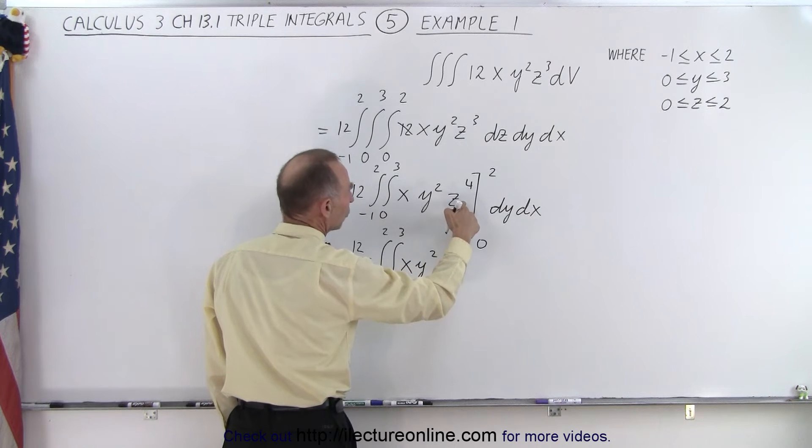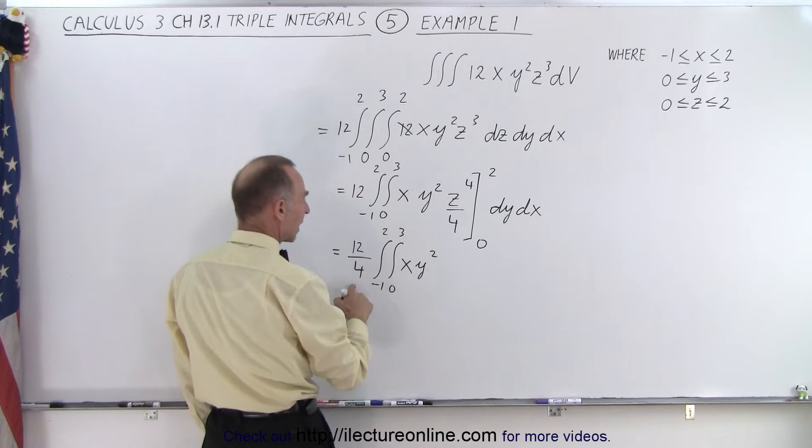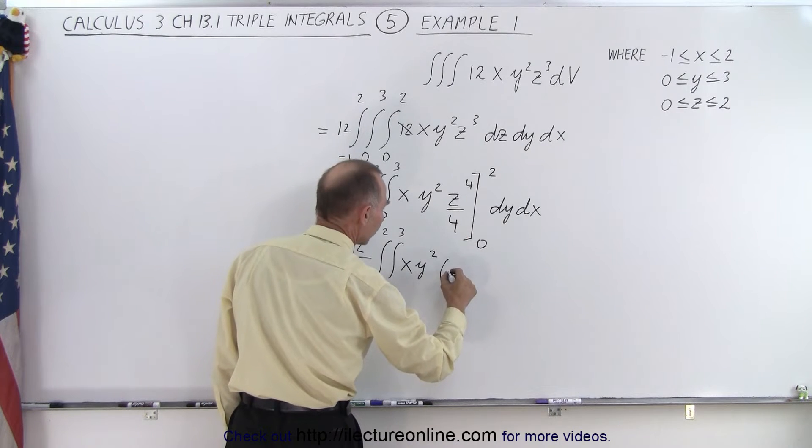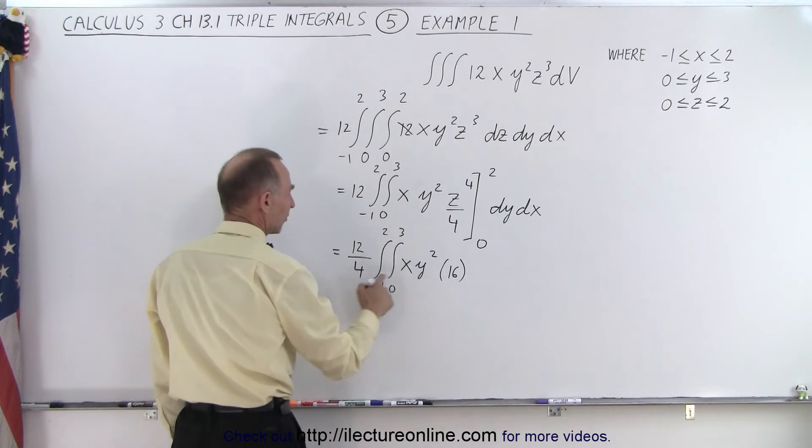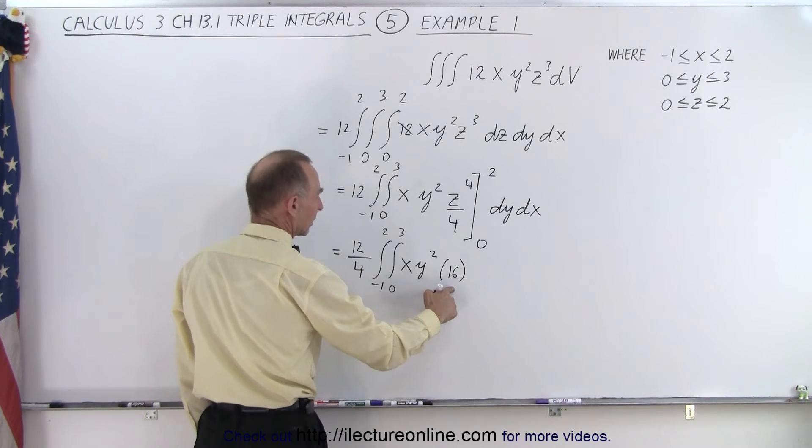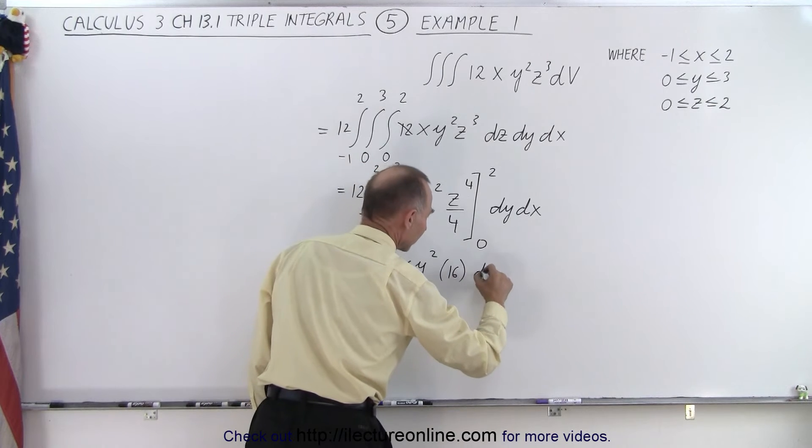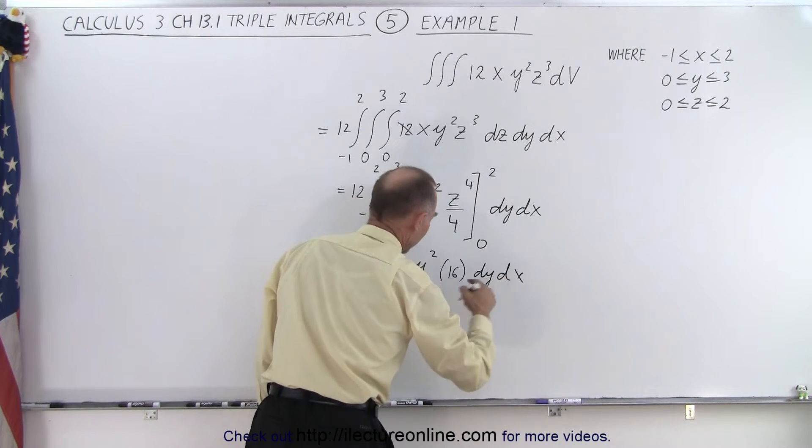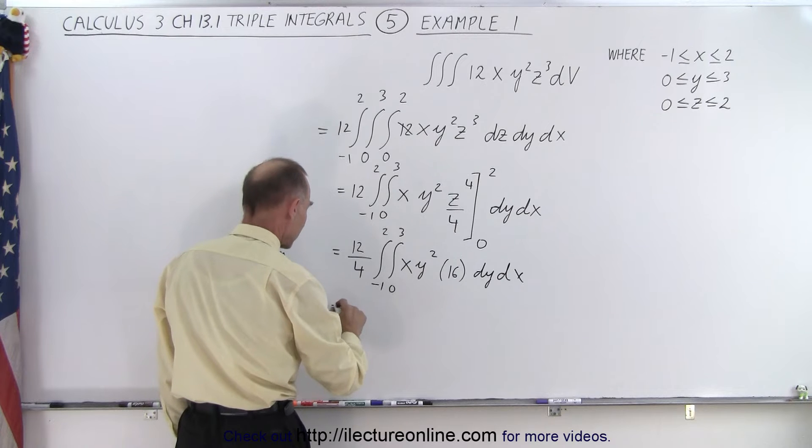Plug in the upper limit we get 2⁴. The 4 was already taken out, so we end up with 2⁴, that would be 16. 4 divided by 16—well I can't forget my dy dx. 16 divided by 4 is 4 times 12 is 48.